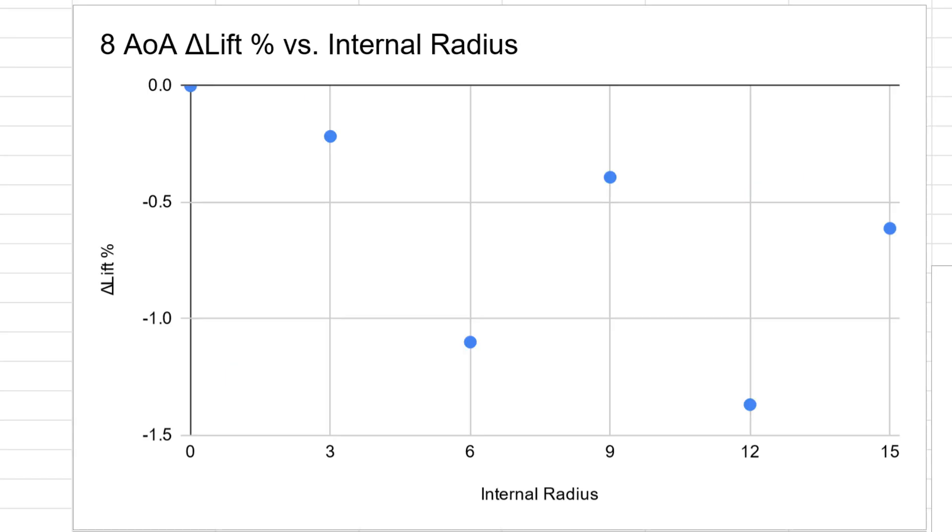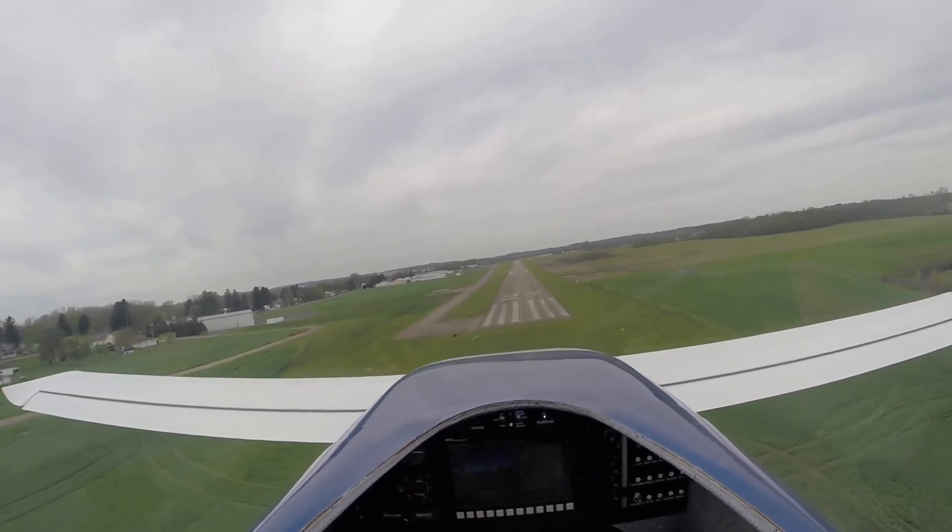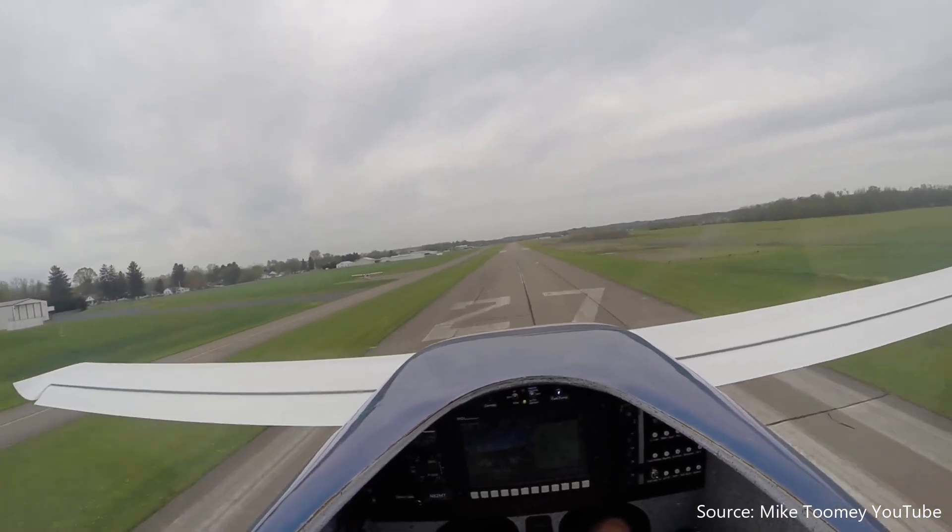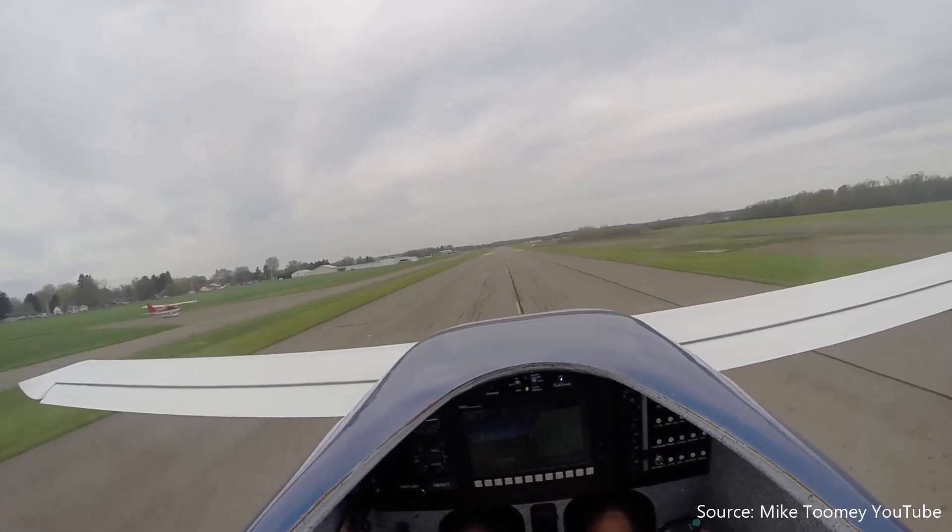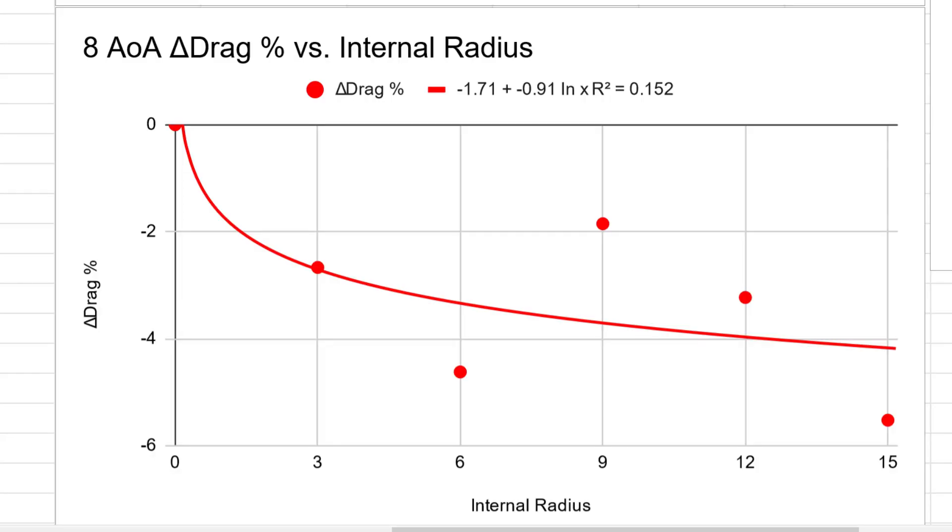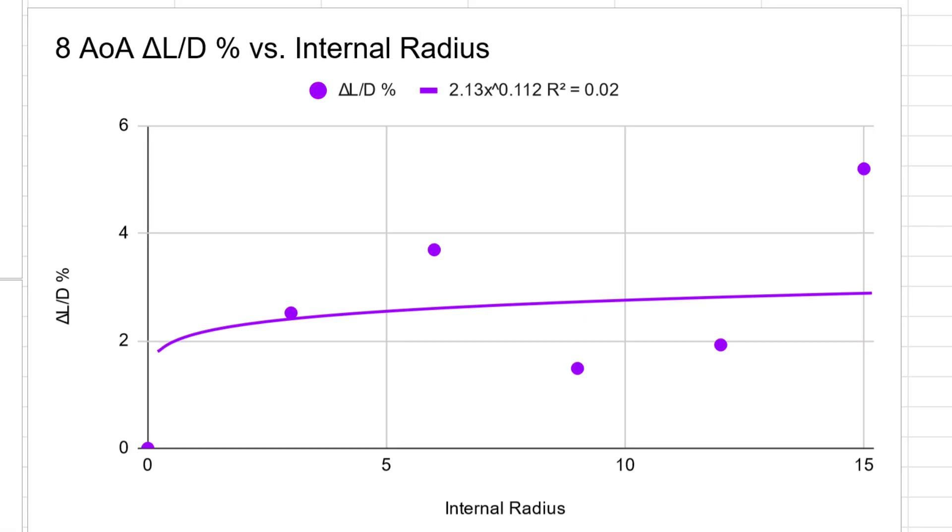Moving on to the 8 degree angle of attack, the lift was all over the place. It was so spread out, I couldn't even generate a line of best fit that seemed to indicate anything. And this does make sense. A curve is designed to reduce interference drag, which is a part of parasite drag. At 90 miles per hour and 8 degrees angle of attack, induced drag is far more powerful than parasite, meaning that the effects of the interference drag would be quite small. Drag, on the other hand, did decrease slightly with an increase in curvature at an 8 degree angle of attack, but these changes were also relatively small. The lift-to-drag ratio graph also supported this.